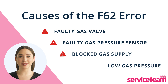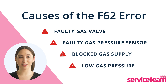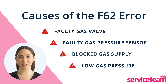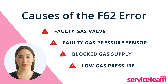If the gas pressure is low, it can cause the F62 fault code. This might happen due to a gas leak or a problem with the pressure regulator. These issues can lead to your boiler shutting down or not working correctly, so it's important to fix them quickly to keep your boiler running smoothly.